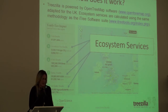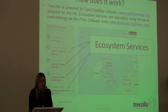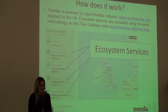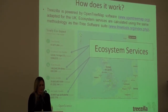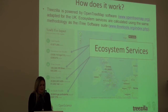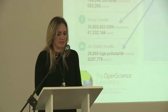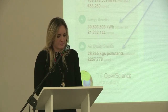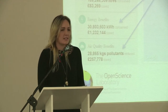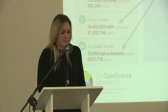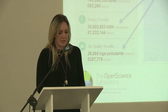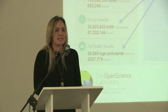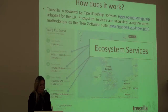So how does it work? Treezilla uses OpenTreeMap software, which is a US-based software that has been adapted to suit the UK climate. OpenTreeMap uses USDA Forest Service software to calculate ecosystem services, and this software is called iTree. Ecosystem services is a term that many of you are already familiar with, but very basically it describes what nature does for us.